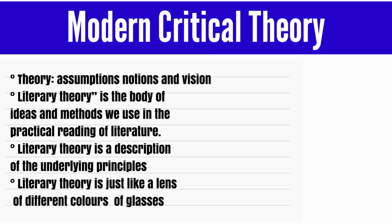Why do we use this theory? We use theory because after an author writes a work, the responsibility shifts to the reader to derive meaning from it. One work can produce many meanings for different people. We learn this in literary theory. The most important theories include feminism, structuralism, post-structuralism, and existentialism, which we will discuss in separate videos.